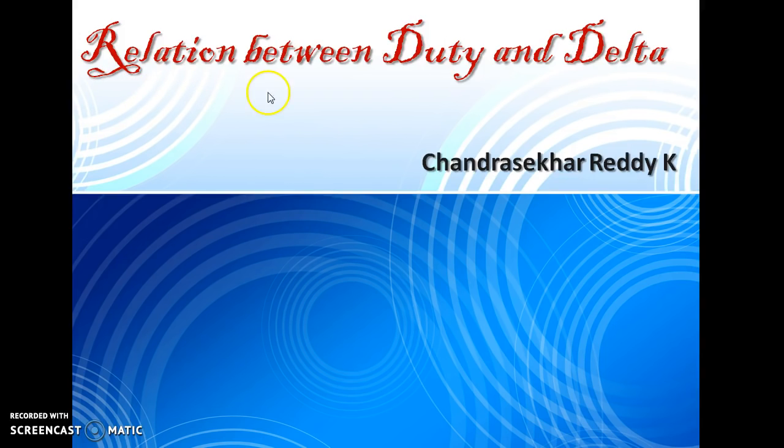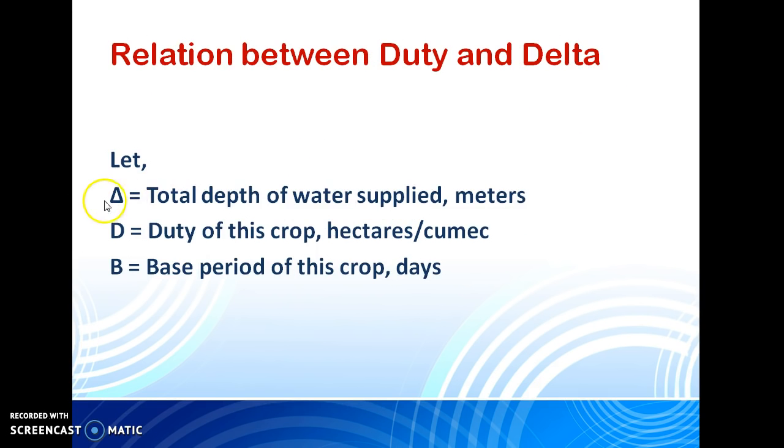Today, we will discuss the relation between duty and delta. For that, let us consider delta is the total depth of water supply in meters. D is the duty of this crop in hectares per cumec. B is the base period of this crop in days.